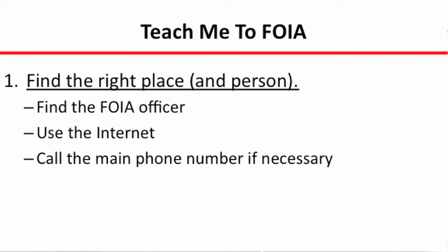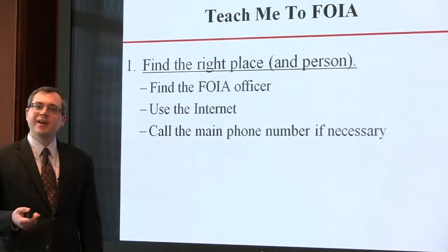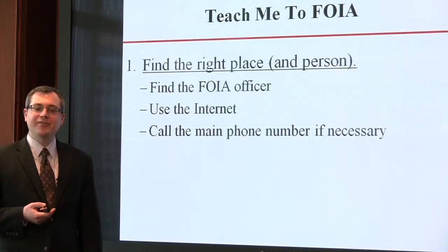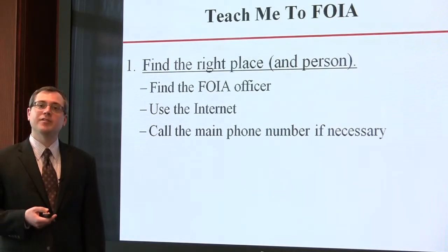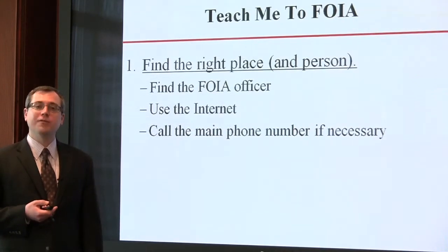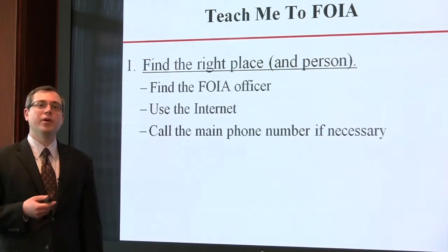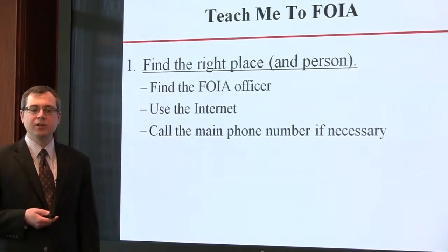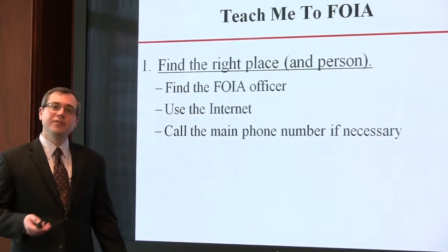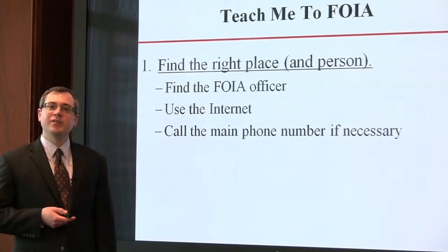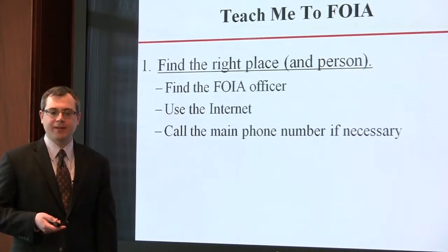You're going to want to find the FOIA officer for the public body. Using the internet is obviously a very helpful way to try to find that information. Many public bodies have a link at the bottom or on one of the sides of their front page called FOIA. If you click on that, you can find the procedures as to where to send a request and who to address it to. If you need to, you can always call a main phone number. If none of these work, you can always send your request to the head of the public body — to the mayor, to the president of the board, or something like that.